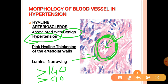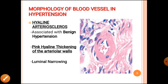This change is known as hyaline arteriosclerosis. Arteriosclerosis means hardening of the vessel, and hyaline material is deposited — that is why the name is hyaline arteriosclerosis. This is the most important change seen in the blood vessel in benign hypertension.